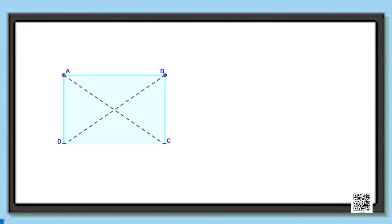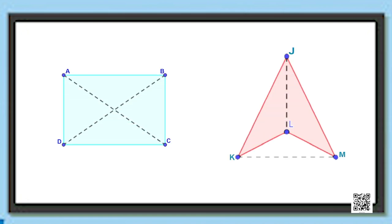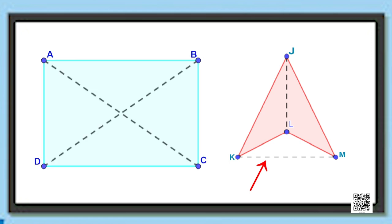Now look at the polygons ABCD and JKLM. Is there a difference between the two? Please observe them carefully. In the polygon JKLM the diagonal KM is in the exterior, whereas in the polygon ABCD both the diagonals are in its interior.